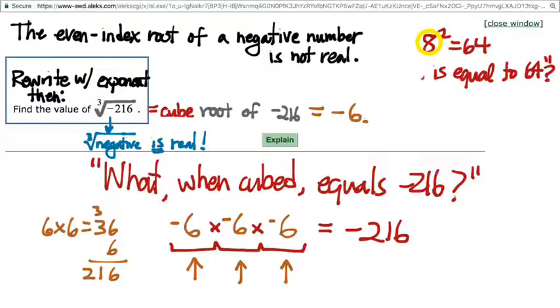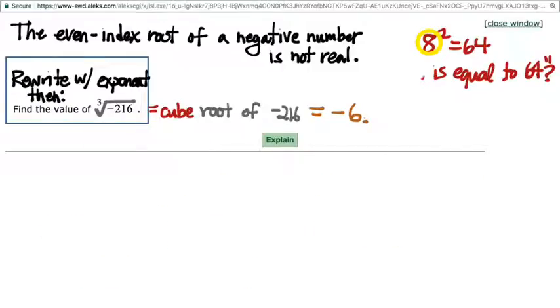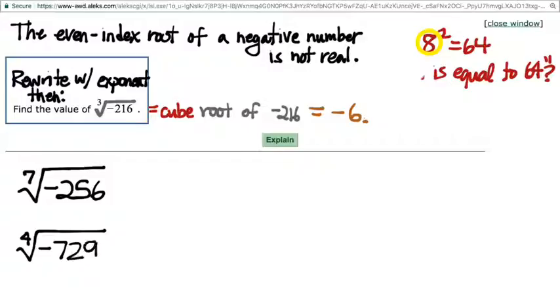So, before we said square root, but that was too specific. Here's the more general principle. It's not real. So, for instance, let me clear out some space here. So, for instance, if I were to write down, I don't know, what is the seventh root of negative 256? And if I were to also write down, I don't know, what is the fourth root of negative 729? Between the two of these, which one is a real number and which one is not a real number? Without even carrying out the calculation.